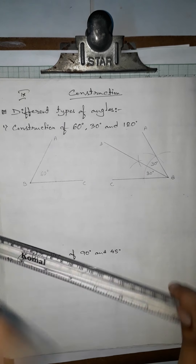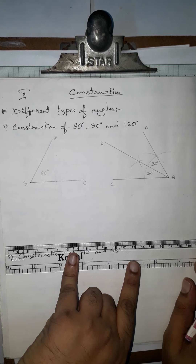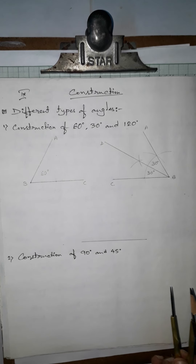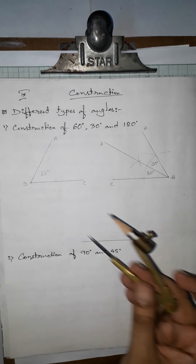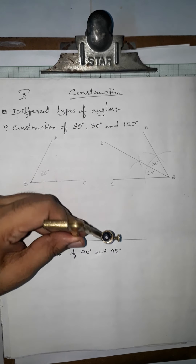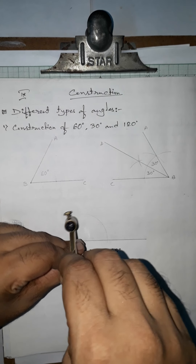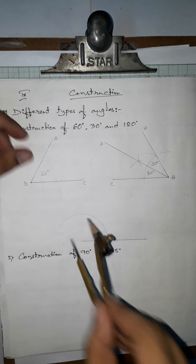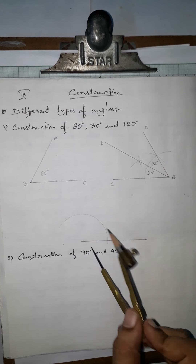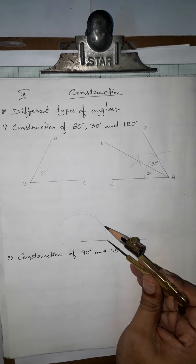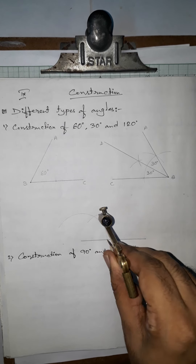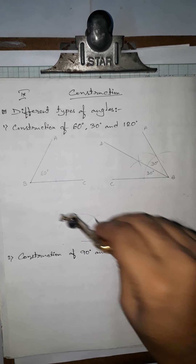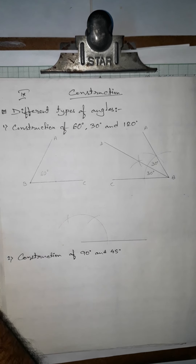For 120 degrees, it is simply double the 60-degree angle. We draw the base, then choose a radius and draw a larger arc from one endpoint. From the new intersection point we give another arc — this marks 60 degrees. Then from that 60-degree point we give yet another arc, which gives us the 120-degree point.